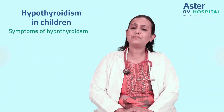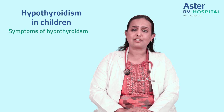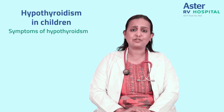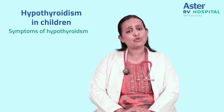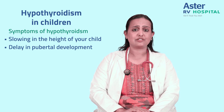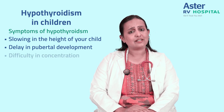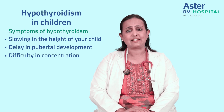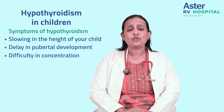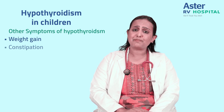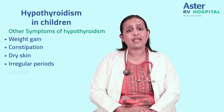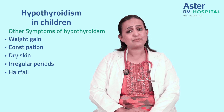The symptoms of hypothyroidism may not be very straightforward, as the thyroid gland is damaged slowly and hormone levels drop gradually. In children, the most important things to look out for are a slowing in height, delay in pubertal development especially in adolescents, difficulty concentrating or performing in school compared to before, or the child becoming lethargic or disinterested. Other symptoms include weight gain, constipation, dry skin, irregular periods in older girls, and sometimes hair fall.